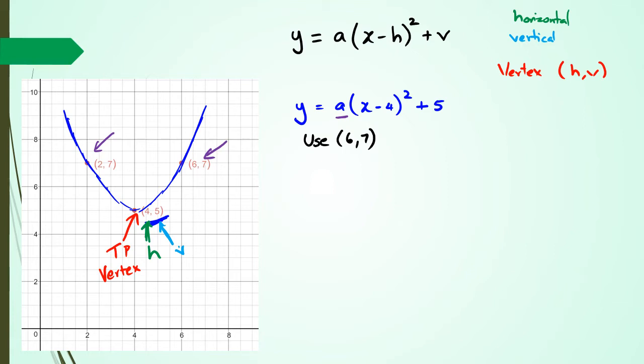Which means, now I know that the 6 is the x value, while the 7 is the y value. So that means I've got y equals 7. So I'm going to replace that y with 7. a is what I'm trying to figure out, so I'm going to leave a as it is. And that's multiplied by x, which in this case is 6, minus 4 squared, plus 5.